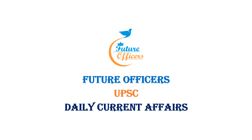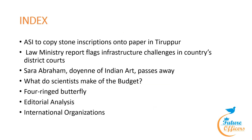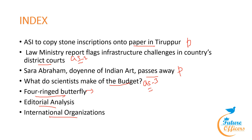Greetings and welcome to Future Offices Academy. Today we are going to see August 5 daily current affairs. The topics include: ASI copying stone inscriptions onto paper using the estampage method; the Law Ministry report flagging infrastructure challenges in district courts; Sara Abraham, a doyen of Indian art, passing away; what scientists make of the budget; the four-ring butterfly new species discovery; editorial analysis; and an international organization topic.